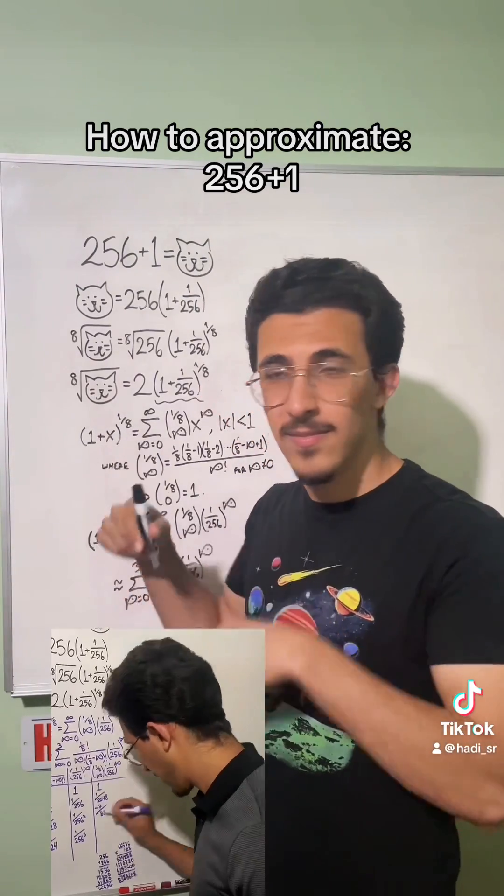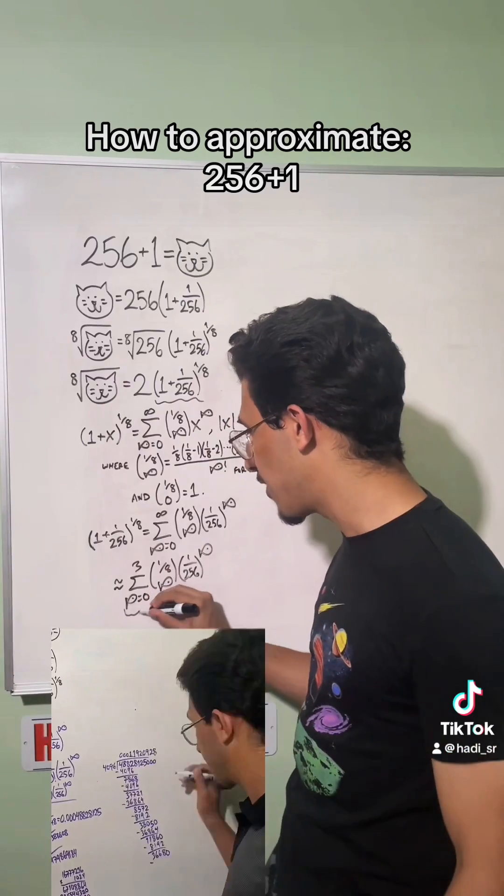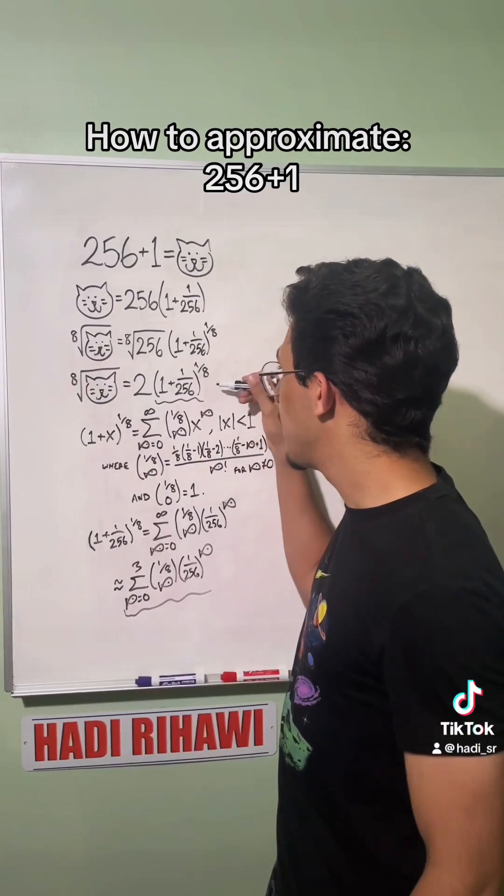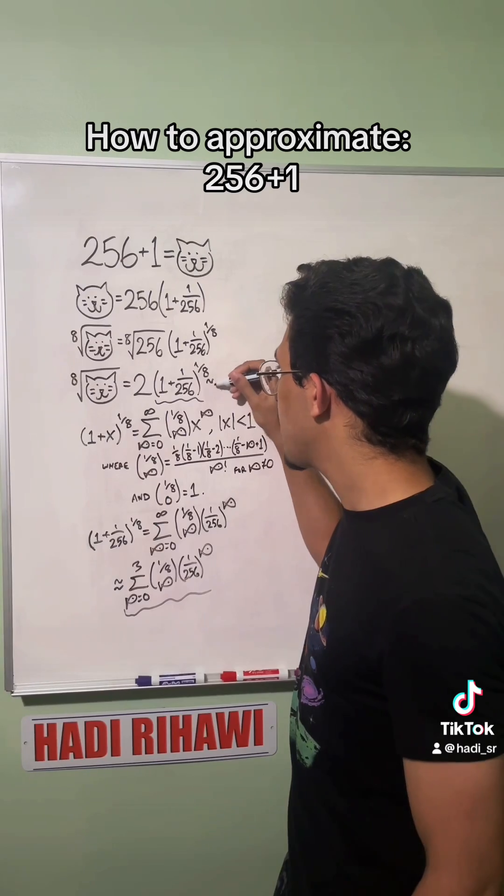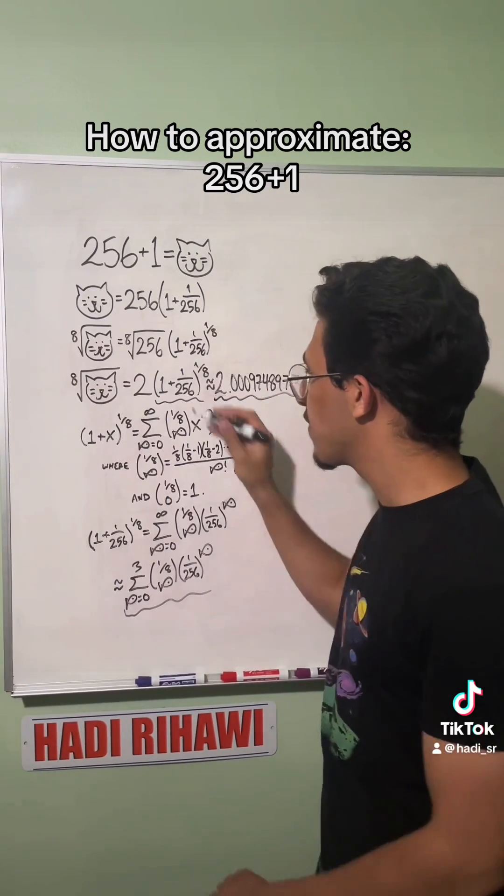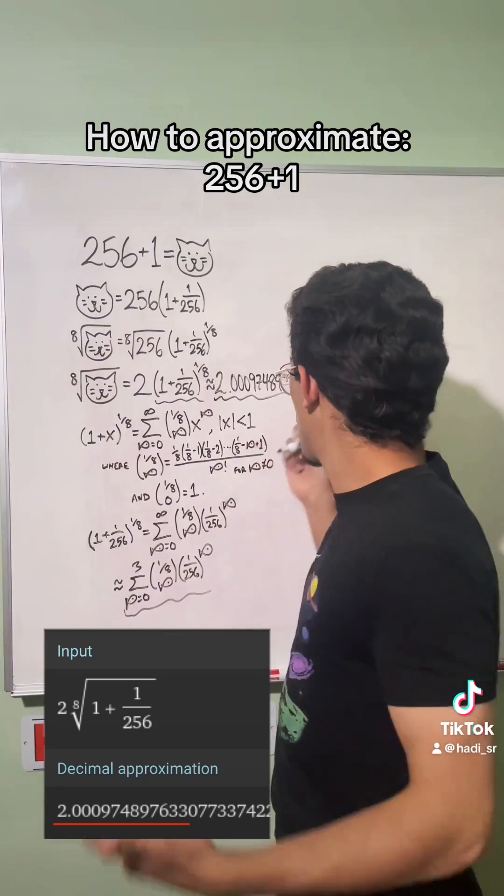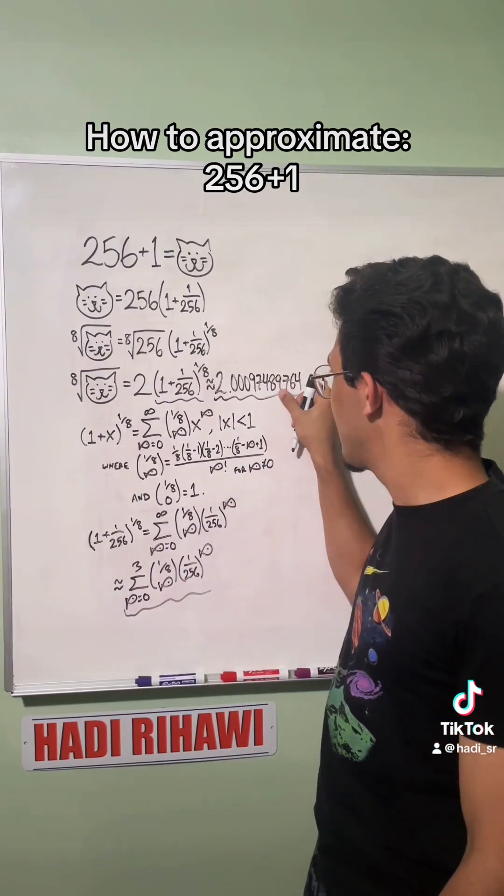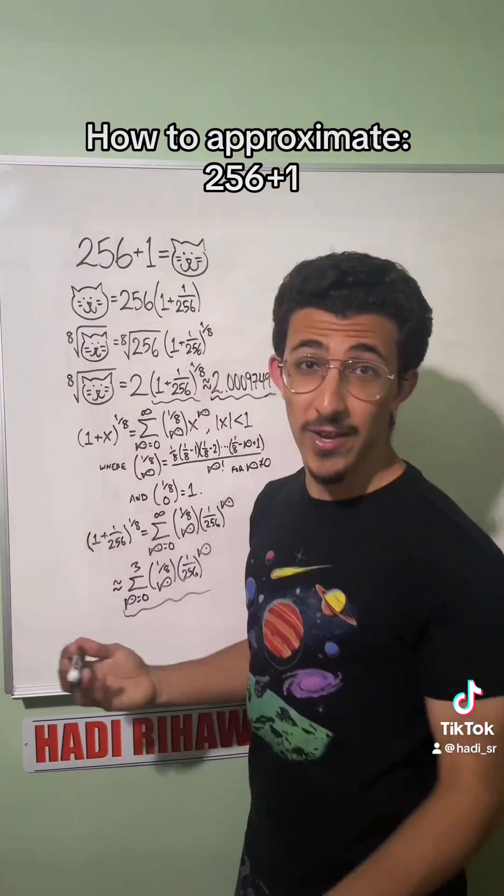So then I get a value for this and I multiply by 2, and that tells me that this is approximately—which we can compare to the real value of this. It's pretty close, pretty good.